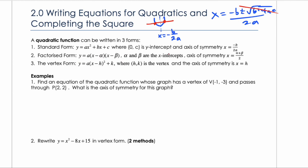In factored form, the axis of symmetry is the average of the x-intercepts — that's common sense because the average of the x-intercepts gives you the middle of the parabola. The easiest of all is vertex form: the axis of symmetry is simply x equals whatever value h is — basically the x-value of the vertex.